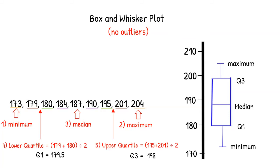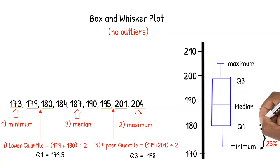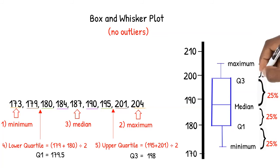This is what our finished box and whisker looks like. From this display, we not only see our five-number summary, we get a better sense of where our values lie. Since 25% of our numbers are in between the minimum and the lower quartile, 25% are between the lower quartile and the median, 25% are between the median and the upper quartile, and 25% are between the upper quartile and the maximum.